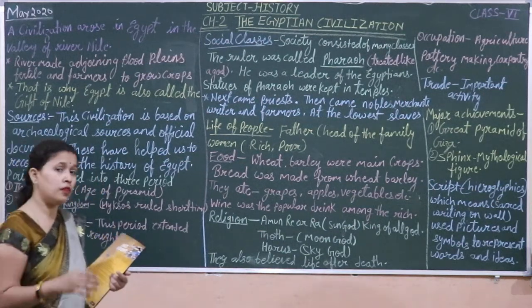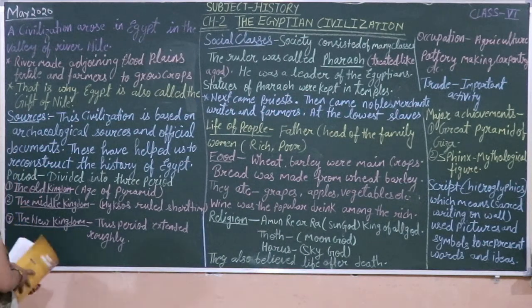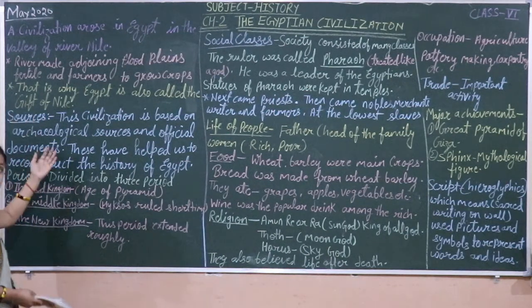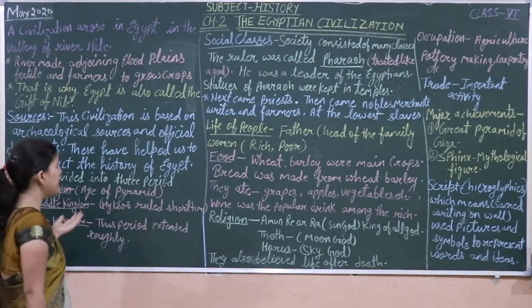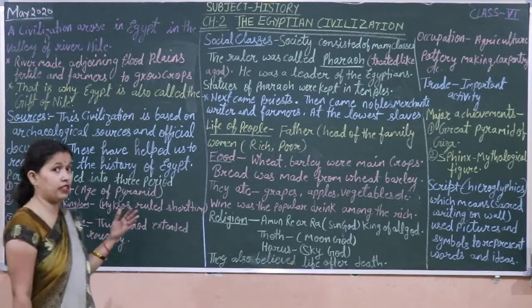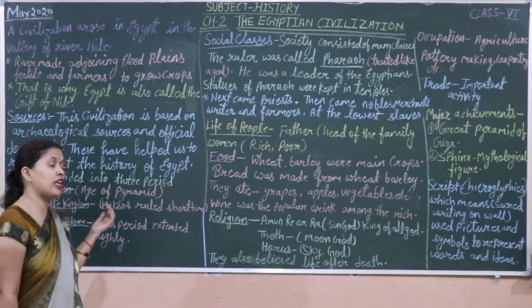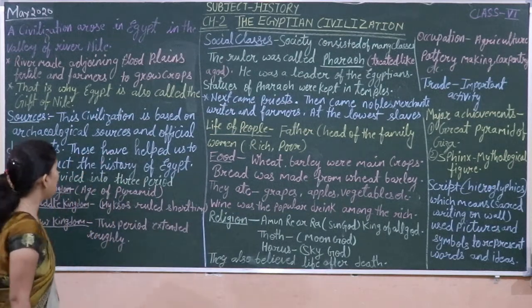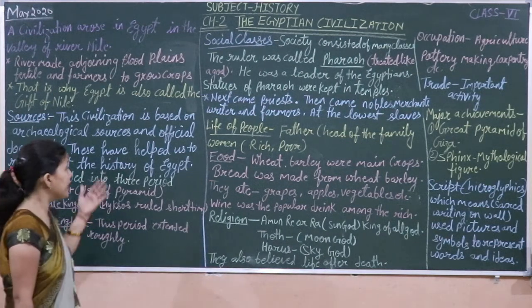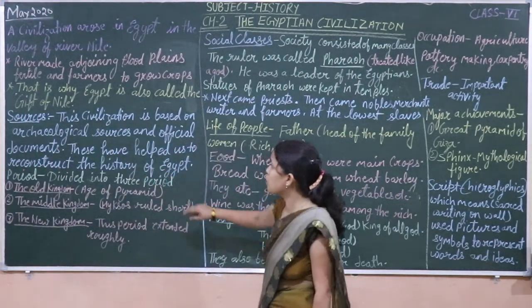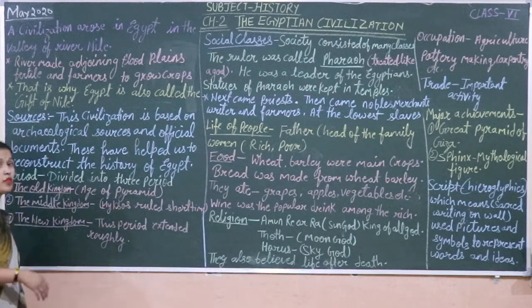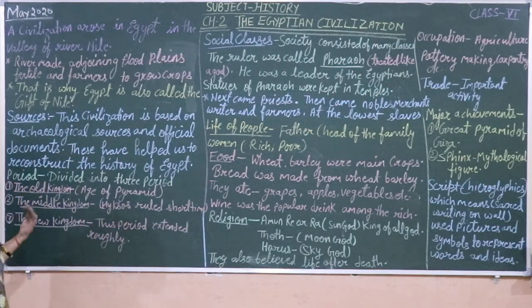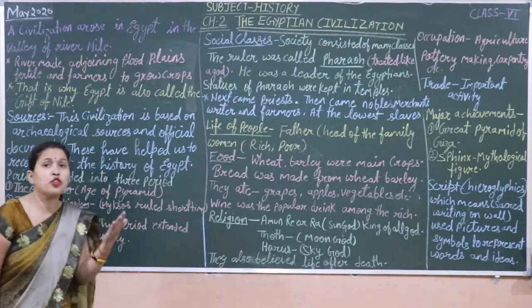We have got some knowledge about this Egyptian civilization. 3300 BCE before the rise — these sources have helped us to reconstruct the history of Egypt. We have got some official documents from our archaeological sources. Egypt's history has been divided into 3 periods.